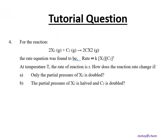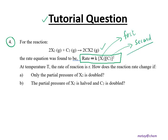Now let's proceed to tutorial question number 4. You are given a chemical equation and also a rate law. Based on this rate law, the order of reaction for X2 is first order, while the order of reaction for C2 is second order, giving an overall reaction order of third order. The question asks: at temperature T, the rate of reaction is R — how does the reaction rate change if only the partial pressure of X2 is doubled?